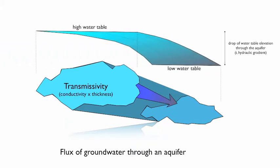The groundwater flux is also a function of the drop in energy as groundwater moves through the aquifer. The level of energy is given by the elevation of the water table. By measuring the water table at two locations along the flow path, one can estimate the slope of the water table, also called the hydraulic gradient. By multiplying the hydraulic gradient by the transmissivity, we can estimate the movement of groundwater through the aquifer, and by multiplying by the cross-section of the aquifer, we obtain the flux of groundwater moving through the aquifers.